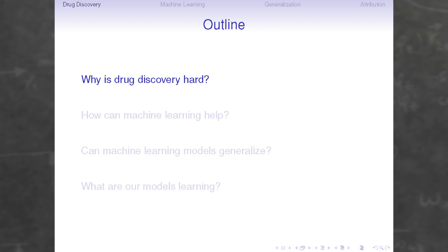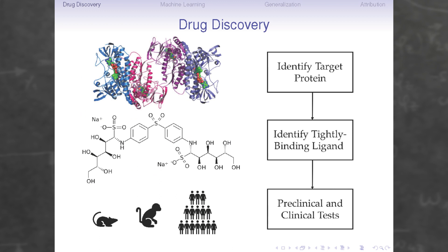Drug discovery today generally begins by identifying a target protein that we're interested in modifying — perhaps by activating it, perhaps by deactivating it. We then identify a tightly binding ligand that carries out our desired function, and run preclinical tests on cell lines, mouse models, and animal models, and later clinical trials in actual humans. This process is known for being time-consuming, expensive, and prone to failure.